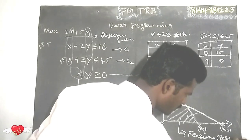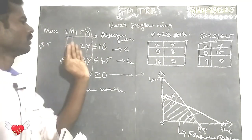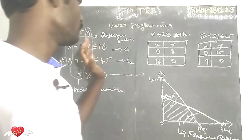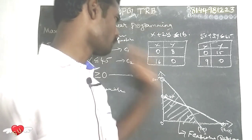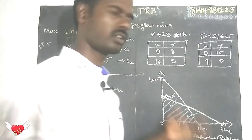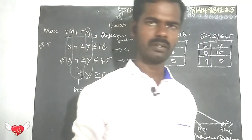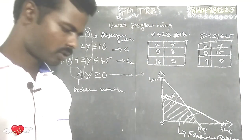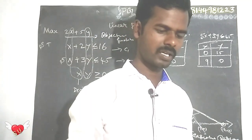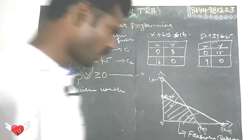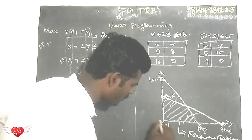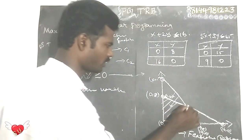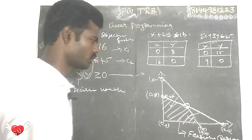Okay, feasible region. So first what we need to know is the decision variables, the objective functions, constraints, and non-negative constraints. We need to know the optimal solution — the points in the feasible region. We need to know the four corner points: (0,0), (0,8), (9,0), and the intersection point.